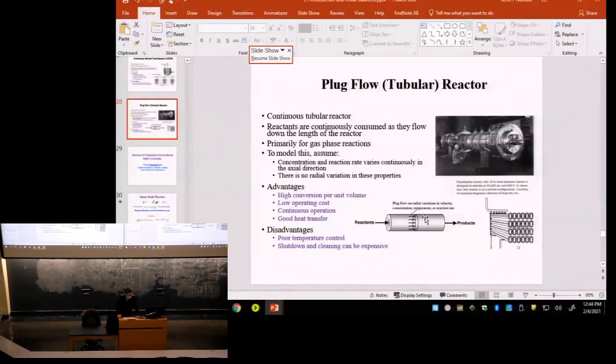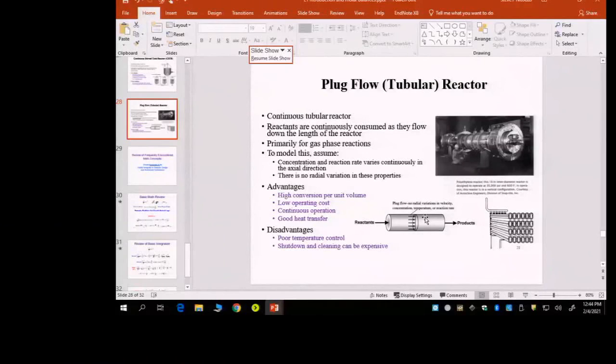The plug flow reactor is also used when you have catalyst. So you have to put the catalyst as a bed all over the tube, and this is what we call packed bed reactor. Because you have the bed of your catalyst, so basically this is a fourth type of reactor close to that. And this is where we use r prime for the reaction rate - it's expressed in terms of grams of catalyst.